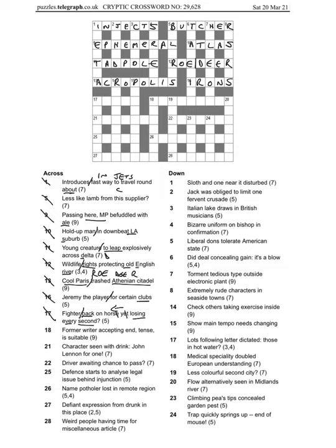18 across: former writer is going to be X, and a writer is often pen, so pen accepting end. So the end is maybe a death, so if you die you end, and then T for tens gives us EXPEDIENCE for suitable.